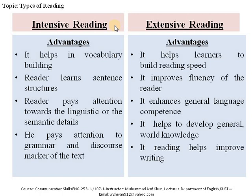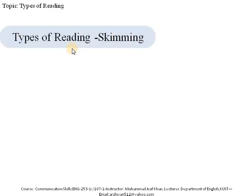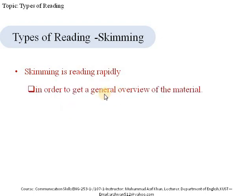Up till now we have discussed intensive and extensive reading. Now let's move towards the two other types: skimming and scanning. Skimming is basically rapid reading done in order to get a general overview of the material. It is very closely associated with extensive reading, and sometimes experts list skimming and scanning as subtypes of extensive reading, but here I am dealing with them as separate entities.